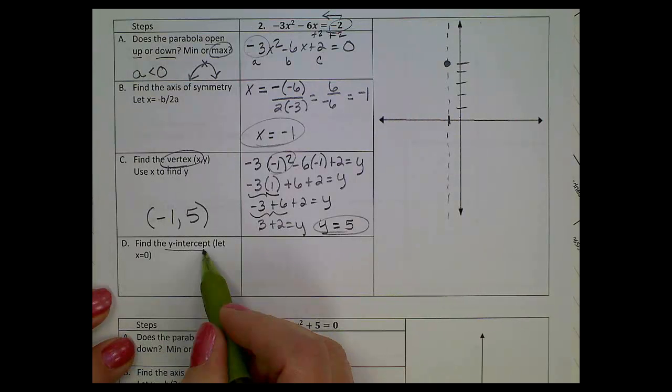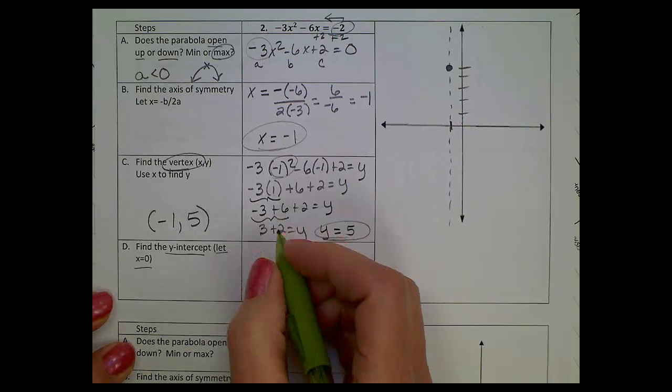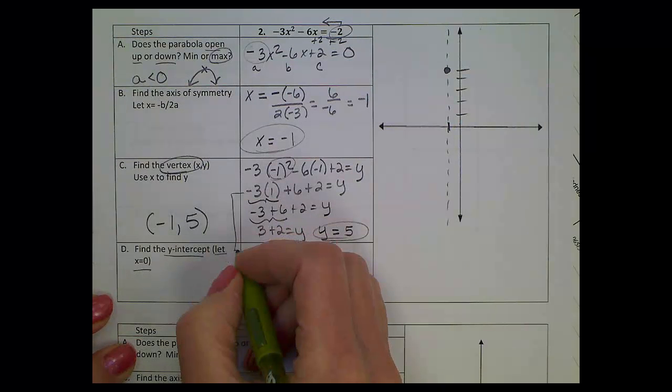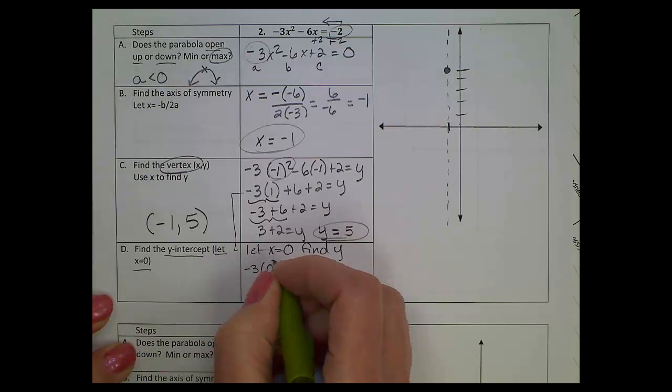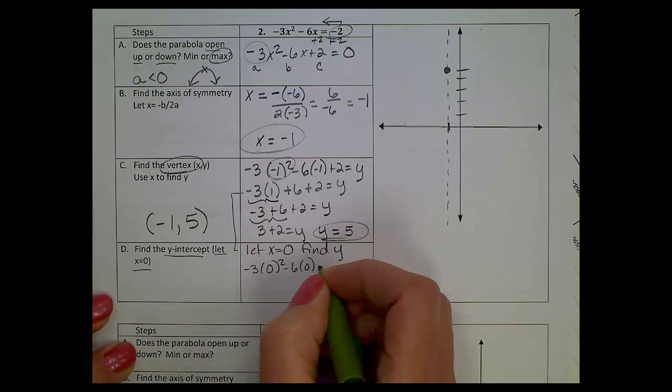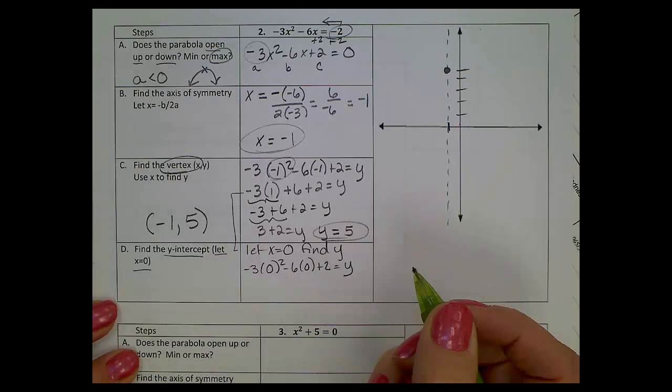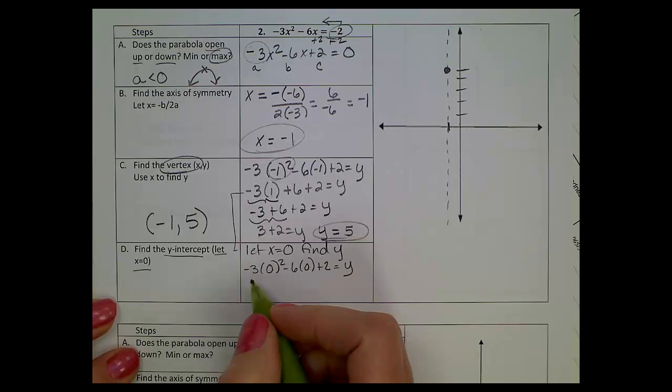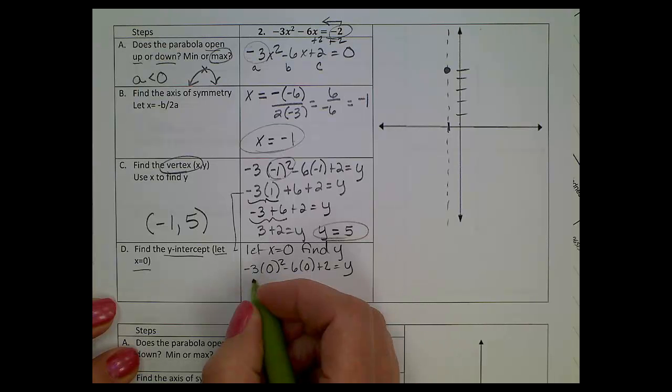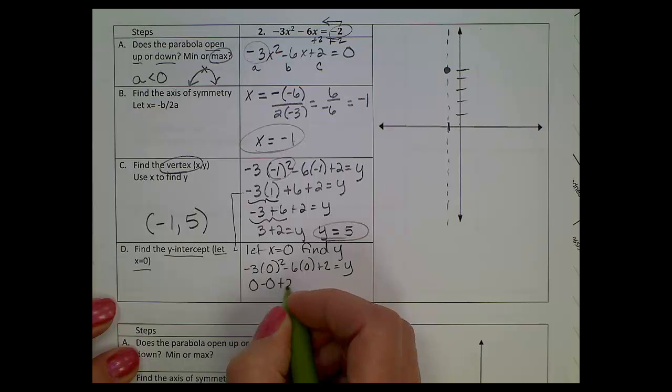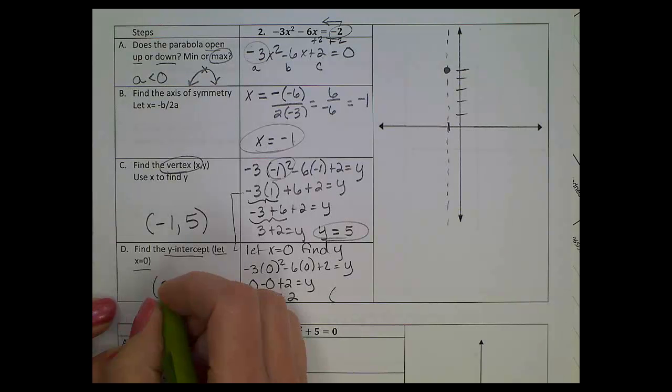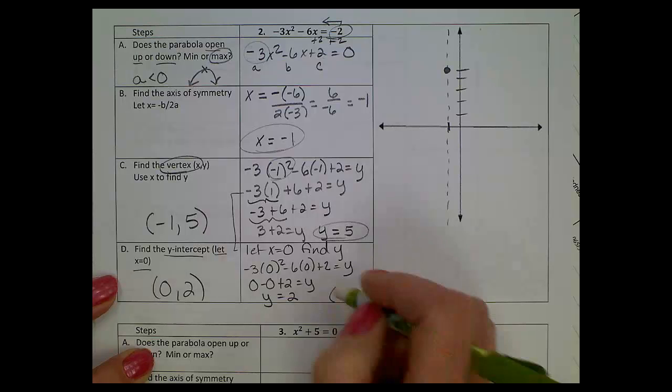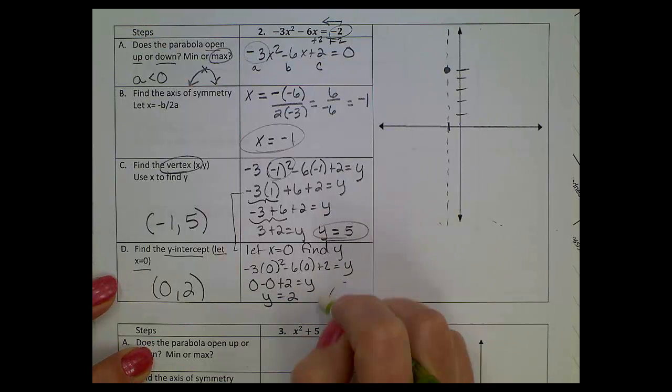Hopefully last step. We're going to try to find the y-intercept. How do we do that? We let x = 0. We use the same equation, but now we're going to plug in zero. I'll have -3(0)² - 6(0) + 2 = y. Easy math when you're looking for the y-intercept because when you plug in zero for all the x's, everything drops out. Zero squared is zero, -3 times zero is zero, six times zero is zero, plus two equals y. Finally, y = 2. So your ordered pair here will be (0, 2).